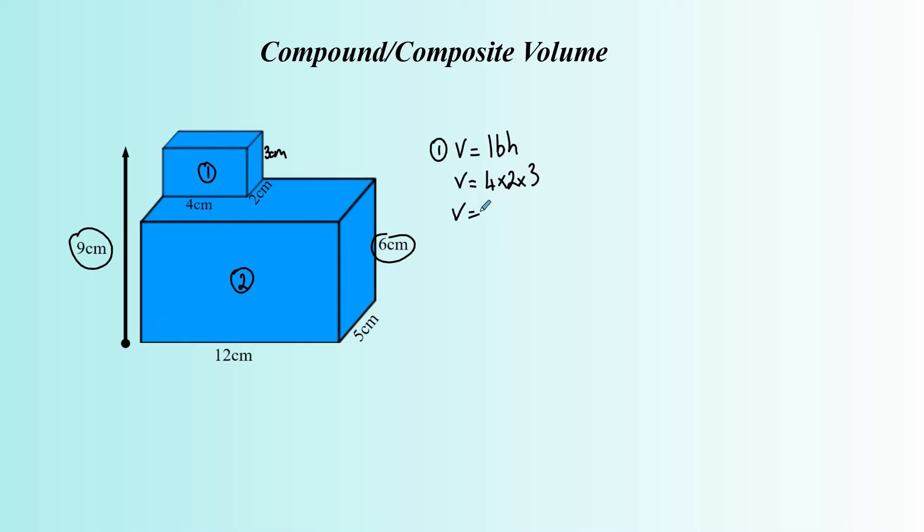Once we've got our three dimensions it's as simple as typing it into the calculator to calculate the answer. So four times two is eight times three is 24 cubic centimeters. That's the small one completed.